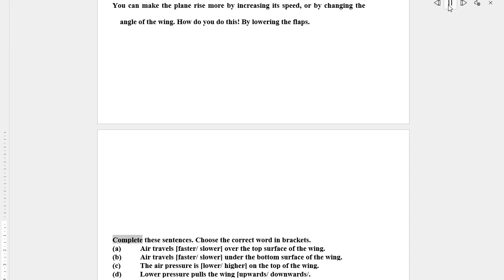Complete these sentences. Choose the correct word in brackets. A. Air travels faster / slower over the top surface of the wing. B. Air travels faster / slower under the bottom surface of the wing. C. The air pressure is lower / higher on the top of the wing. D. Lower pressure pulls the wing upwards / downwards.